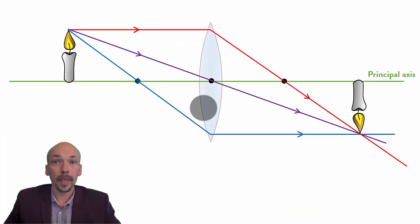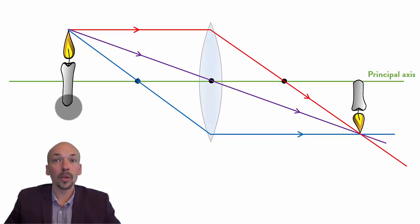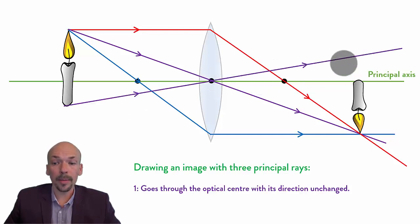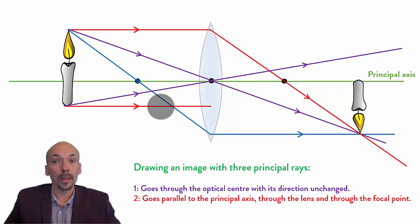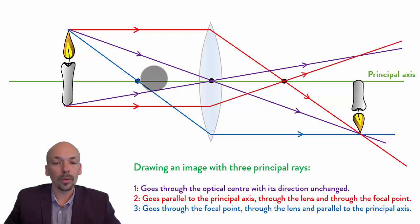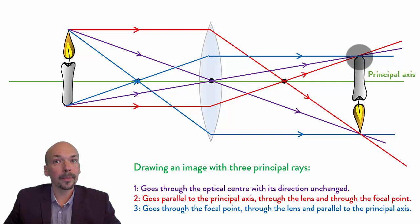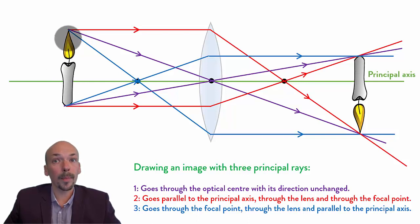Now let's look at another situation. Here we will make the object a bit bigger, so it doesn't end at the principal axis — it ends somewhere below. To determine where the image will end, we need to do the same thing at the bottom. We draw the three principal rays from the bottom: the first through the optical center, the second parallel to the axis then through the focal point, and the third through the focal point then parallel to the axis. They intersect, giving us the bottom of the image. So if your object doesn't end at the principal axis, you have to draw this twice — once from the top and once from the bottom.